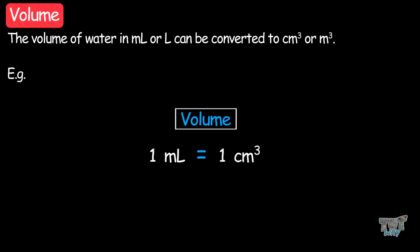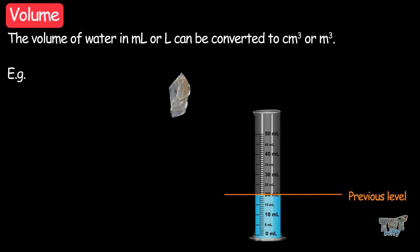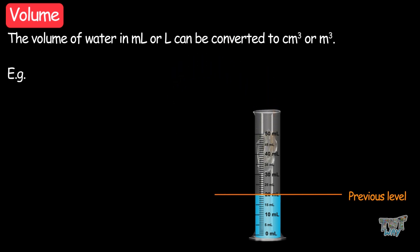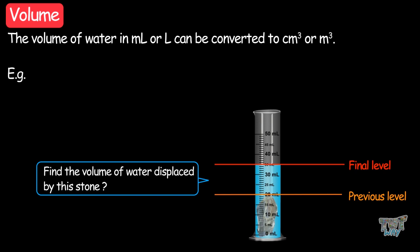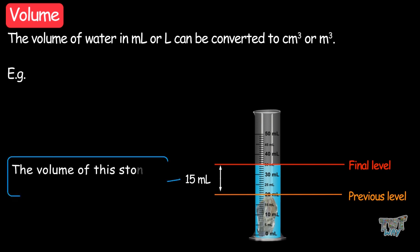Here we have another example. We have to measure the volume of a stone. We have a graduated beaker filled with water. Now dip the stone into the water and read the graduated beaker to find out the volume of water displaced by the stone. It is about 1.5 milliliters. So the volume of the stone is 1.5 milliliters or 1.5 cubic centimeters.